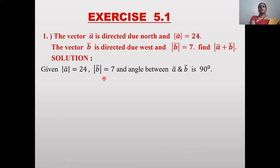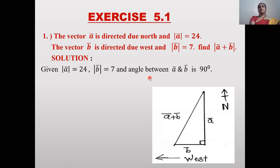The angle between ā and b̄ is 90 degrees. Vector ā is directed due north, b̄ is directed due west, so the angle between them is 90 degrees. We have to find |ā + b̄|, which means we have to find the diagonal of the triangle formed by these two vectors.